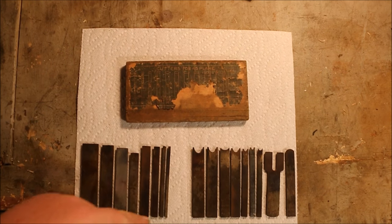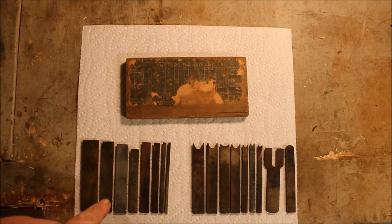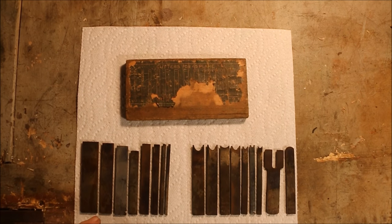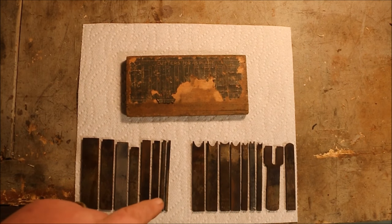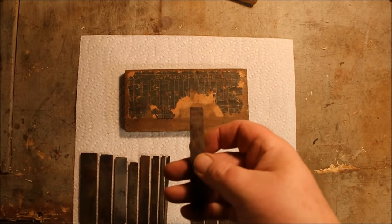These don't have the notches. You can see that this one has a notch, that one has a notch. Those are for the current style Stanley 45 that I have. The rest of them are for an older version and I don't know the exact date on the thing.